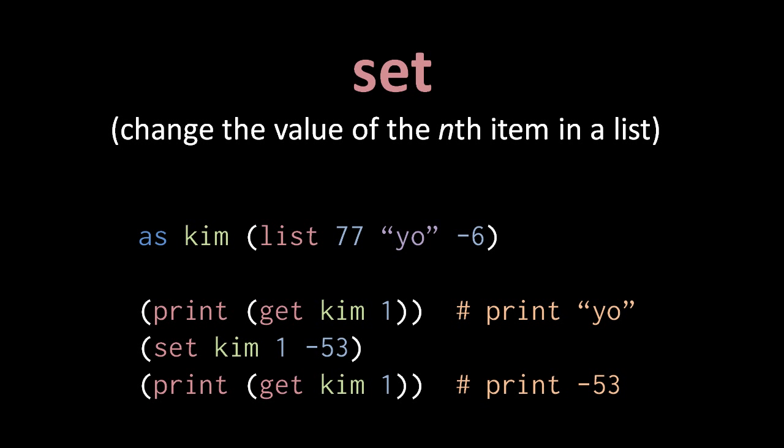But if we then invoke set on the list Kim, specifying index 1 and a new value negative 53, then we're modifying the list, changing its second item to be the value negative 53 instead of the string Yo. So when we again print the value returned by get Kim 1, the value negative 53 is printed.